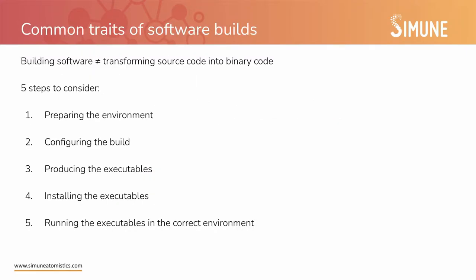Let's now start. First I would like to emphasize that building software is not just transforming source code into binary code, but there are many things around which are involved in the success of the whole process. So first you have to prepare the environment, then configure the build, then produce the executables, then install them or put them somewhere where they can be used, and finally run the executables in the correct environment.